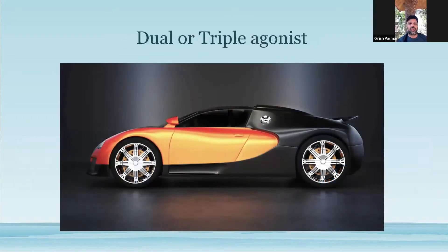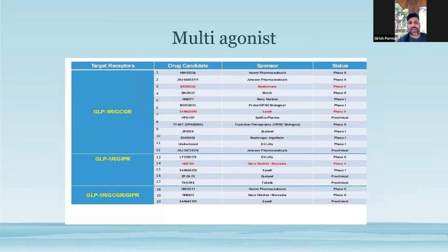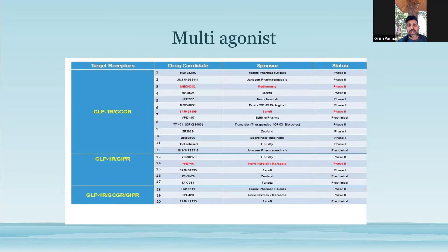We are looking at a molecule capable of not only acting at the GLP-1 pathway or receptor, but simultaneously capable of acting at the level of GIP receptors or the glucagon receptor. There are many multi-agonist molecules under clinical trial, actively being pursued in phase 1 and phase 2 trials, which have the capability of simultaneous stimulation — dual or triple agonist molecules which are being actively explored.